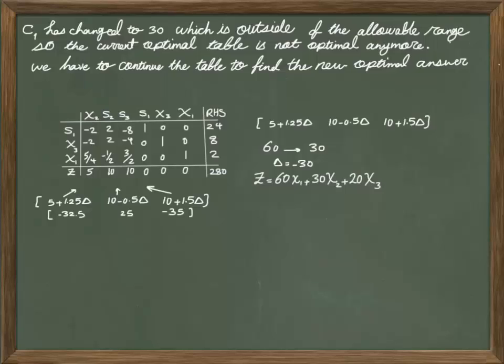Also, I have to update my objective function. My objective function coefficient 60 now is 30. Now if I calculate the new objective function, I get 220.